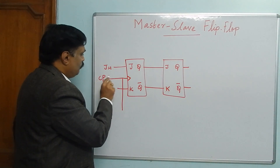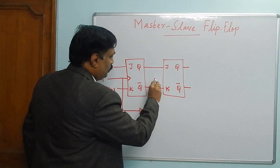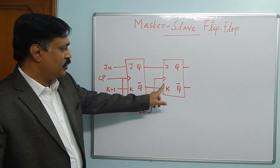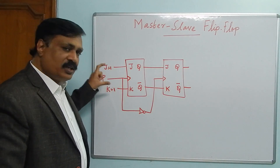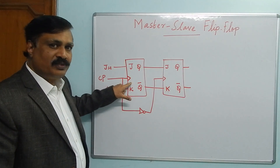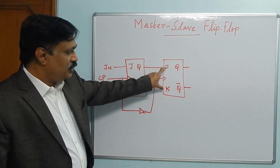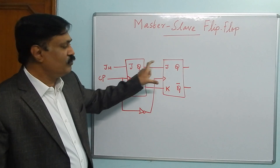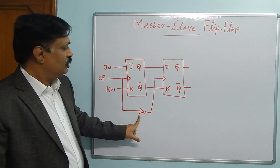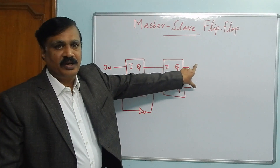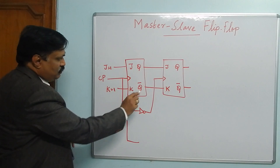The first flip-flop is connected to the clock pulse which is positive triggering. The second flip-flop is connected through a NOT gate. That means the first flip-flop will respond to the inputs on the positive triggering of the clock pulse. The same clock pulse connected through a NOT gate gives negative triggering to the second flip-flop, so the second flip-flop will not respond to changes during the positive triggering.